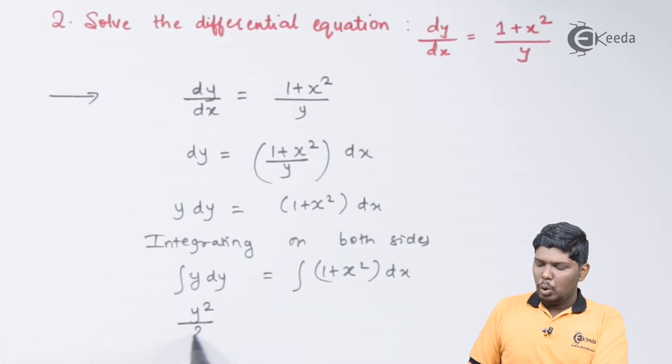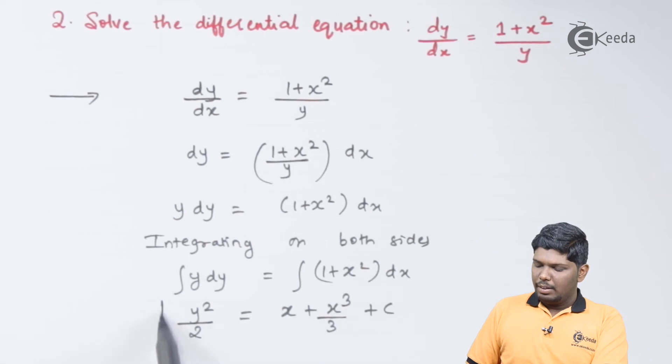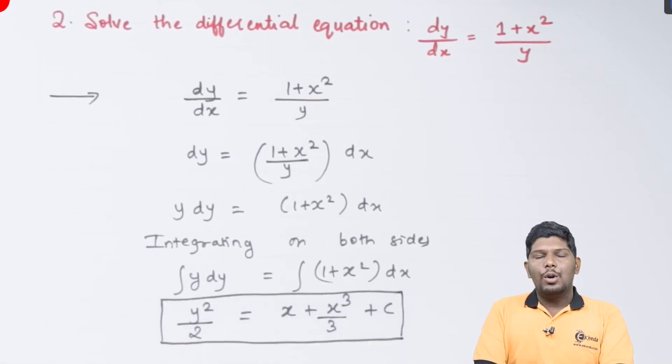Now integral of y we know it is y square upon 2. On the right hand side, integral of 1 dx will give you x plus integral of x square will give you x cube upon 3 plus c. This is our general solution.